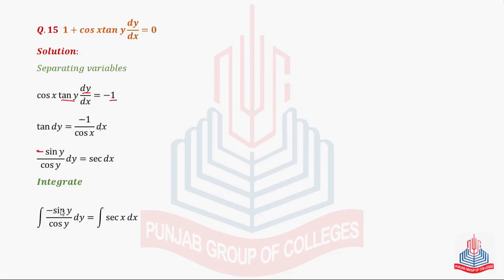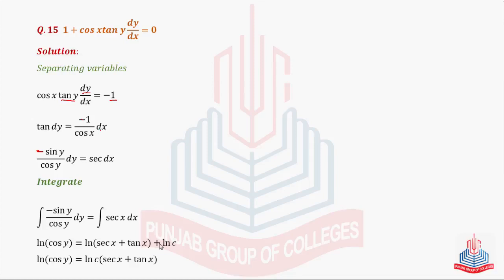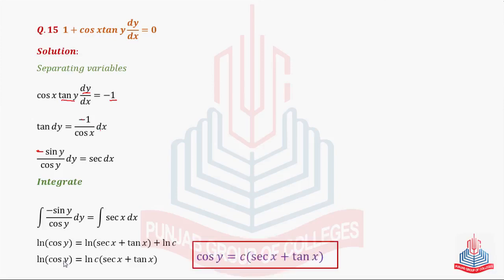Ab cos y ka derivative maujood hai, lehaza hum integration ka formula use kar sakte hain. Left side ka integral log of cos y, and right side ka integral — hum jaante hain — log of secant x plus tan x, plus constant of integration in the form of log c. Do values log mein add ho rahi hain to property of log use karenge — multiply ho jaengi. So we have cos y is equal to c into (secant x plus tan x), which is the required solution of the given differential equation.